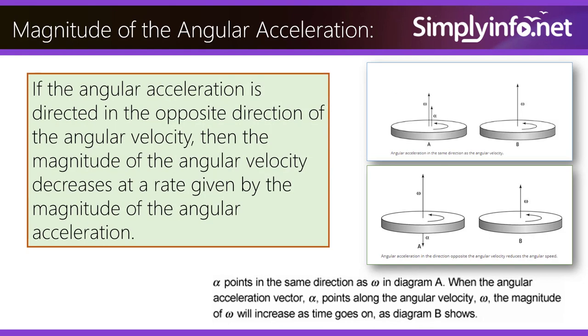Magnitude of the angular acceleration. If the angular acceleration is directed in the opposite direction of the angular velocity, then the magnitude of the angular velocity decreases at the rate given by the magnitude of the angular acceleration. So on the image,